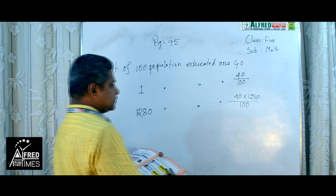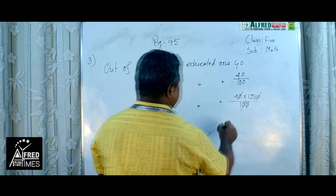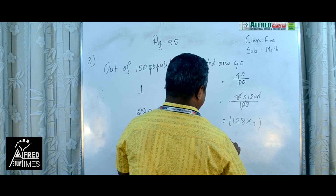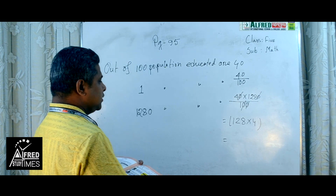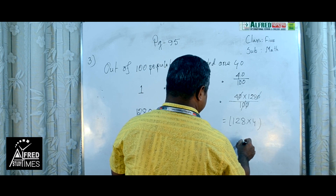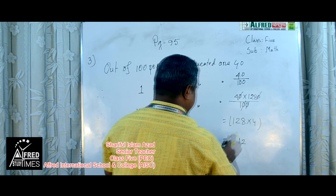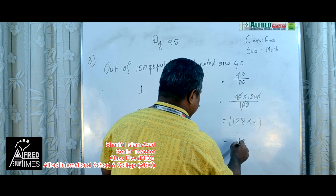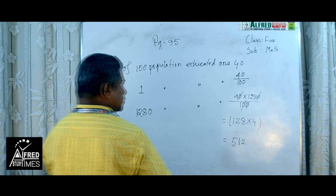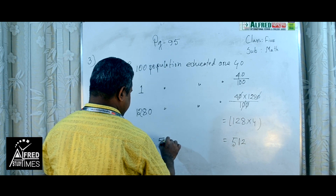Now we calculate: the zeros cancel, giving us 128 into 4. Calculating: 4 times 8 is 32, carry 3; 4 times 2 is 8 plus 3 is 11, write 1 carry 1; 4 times 1 plus 1 is 5. So the answer is 512.